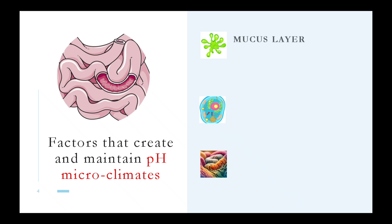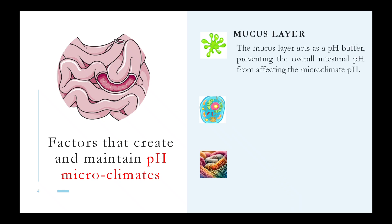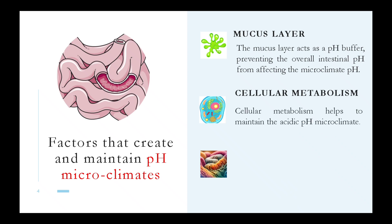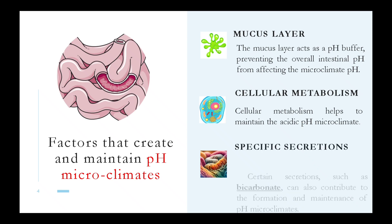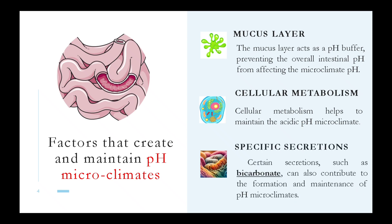The mucus layer acts as a pH buffer, preventing the overall intestinal pH from affecting the microclimate pH. Cellular metabolism helps to maintain the acidic pH microclimate. Certain secretions, such as bicarbonate, can also contribute to the formation and maintenance of pH microclimates.